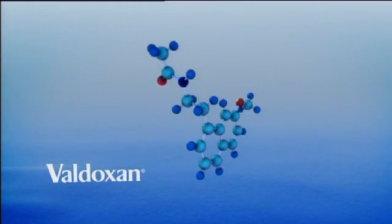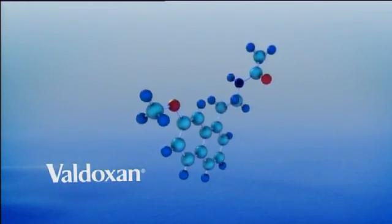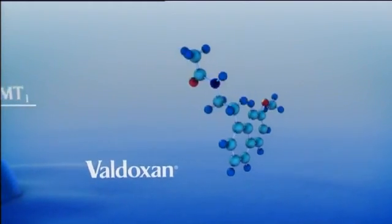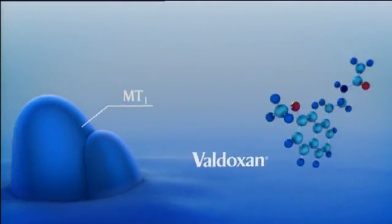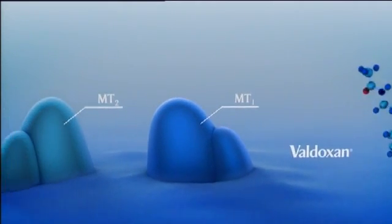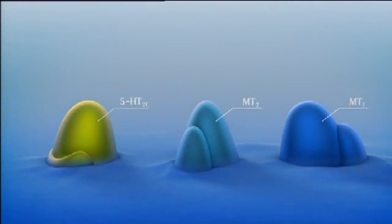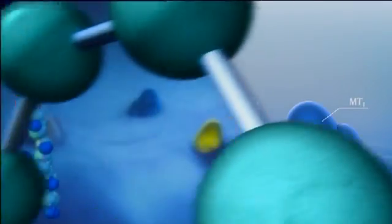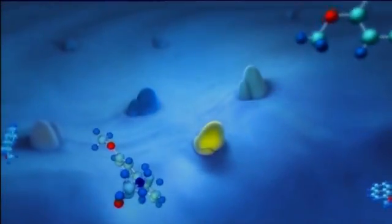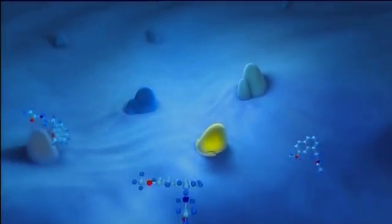With Valdoxan, a treatment exists that efficiently resynchronizes disturbed circadian rhythms in depression. Valdoxan resynchronizes circadian rhythms by its unique action on three key receptors, all of which are highly concentrated in the internal master clock and in other regions of the brain related to depression.